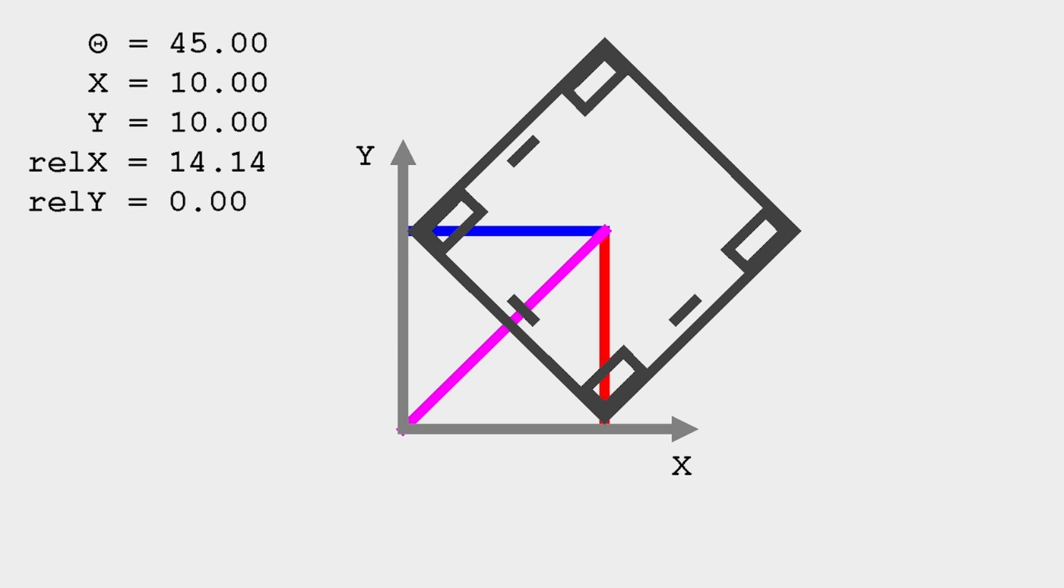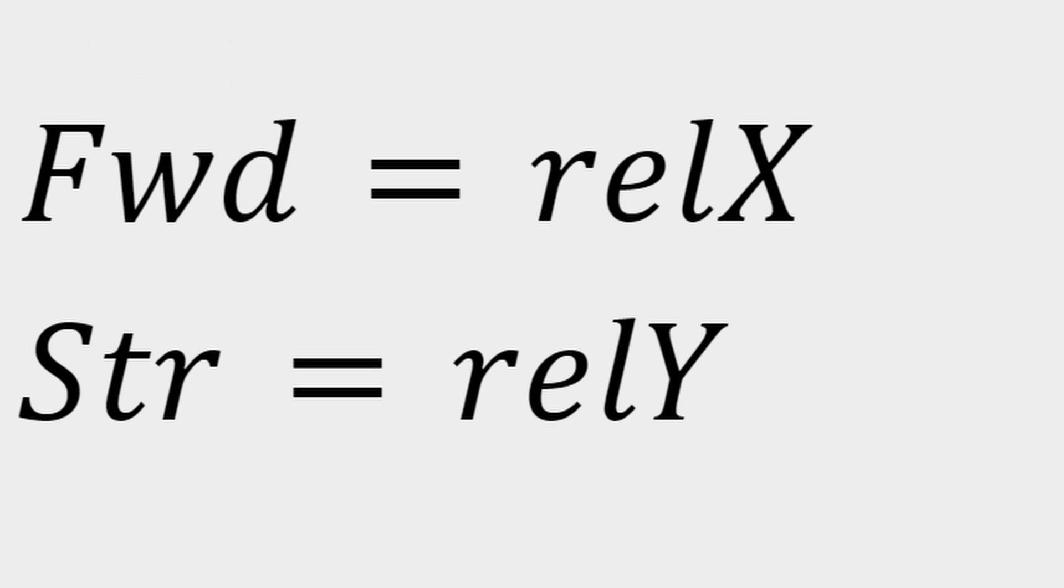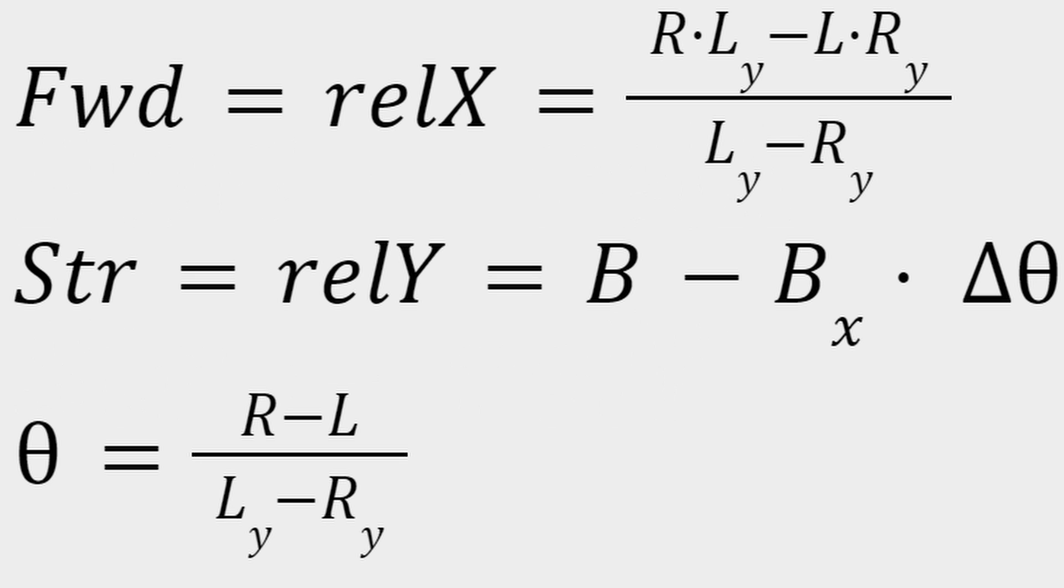Likewise, if we strafe 10 inches to the left, our relative movement will always be 10 inches in the relative y. I will therefore use the words relative x and forward along with relative y and strafe interchangeably. Last video, we derived these equations for the relative movement of the robot in each loop. If you want a refresher on how we did that, you can rewatch the previous video.